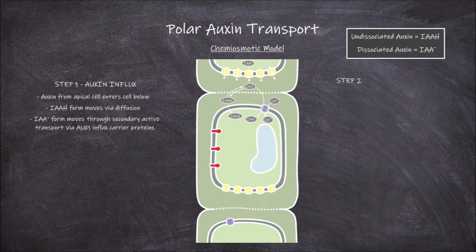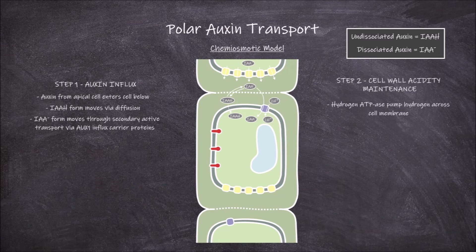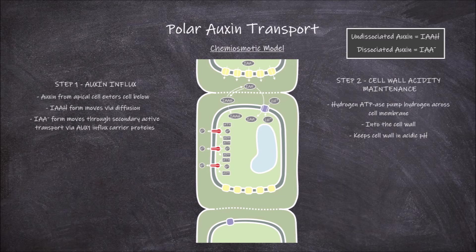The next step is cell wall acidity maintenance. The hydrogen ATPase membrane proteins are involved in pumping hydrogen out across the cell membrane into the cell wall. This keeps the cell wall at an acidic pH whilst keeping the cytosol at a neutral pH.